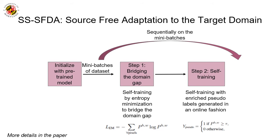During the second stage, we initialize the model using the pre-trained model from the previous step and the target domain images. We use a combination of curriculum learning and entropy minimization to bridge the domain gap between the pseudo labels and the target domain images. We first sort the target domain images in increasing order of entropy and create mini-batches of the dataset. The next steps on each mini-batch are: optimize the model with an entropy minimization constraint to bridge the domain gap, and self-train the model by generating enriched pseudo labels in an online manner.